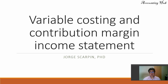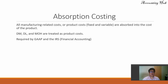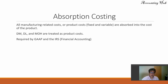Before we talk about variable costing, we need to talk about absorption costing. In absorption costing, all manufacturing-related costs or product costs — fixed and variable — are absorbed into the cost of the product. So direct material, direct labor, and manufacturing overhead are treated as product costs. We classify costs into product costs and period costs. It is required by GAAP and the IRS, so it is used by financial accounting.